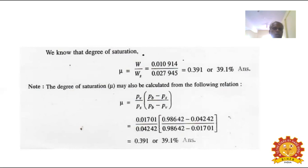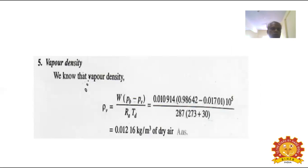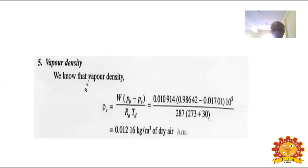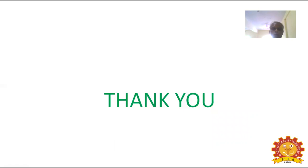Next is vapour density. We know that vapour density rho_V equals W times (P_B minus P_V) divided by R_A times T_d. Substituting w value, P_B, P_V, R_A, and T_d values and simplifying, we get rho_V equals 0.01216 kg per m³. So up to here we have discussed the basics of psychrometry. Thank you.